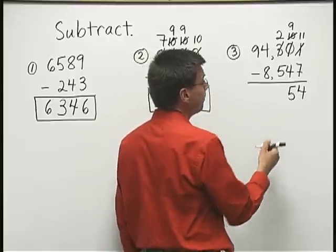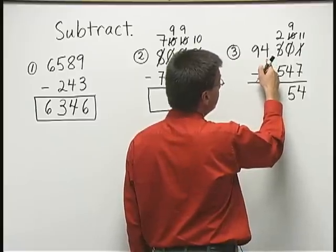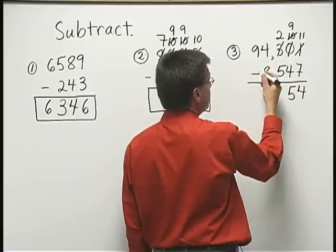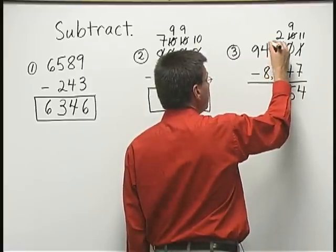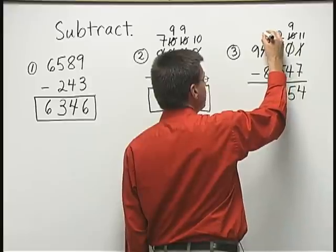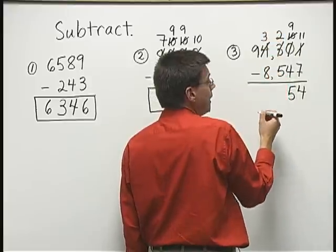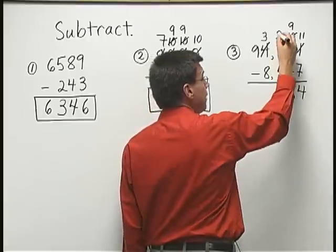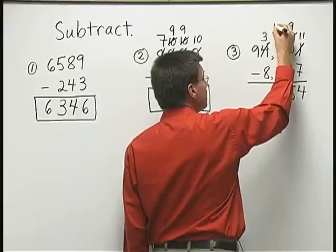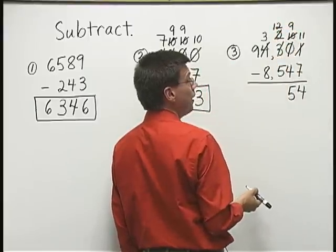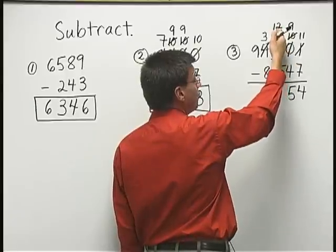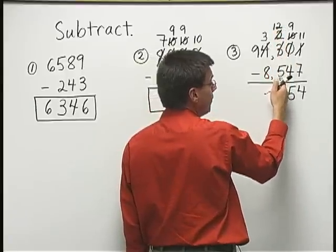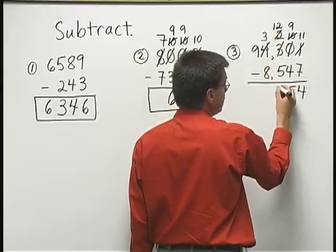I move one place to the left. That's the thousands place. And I'm going to take one of these thousands. This becomes three then. And exchange it for ten hundreds. The ten hundreds, I add to the two that's already there. So, that becomes twelve. Now, I have twelve. Take away five, is seven.